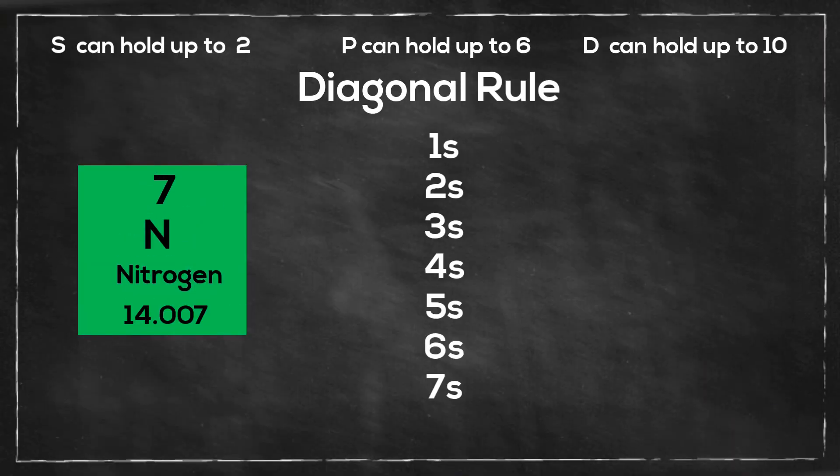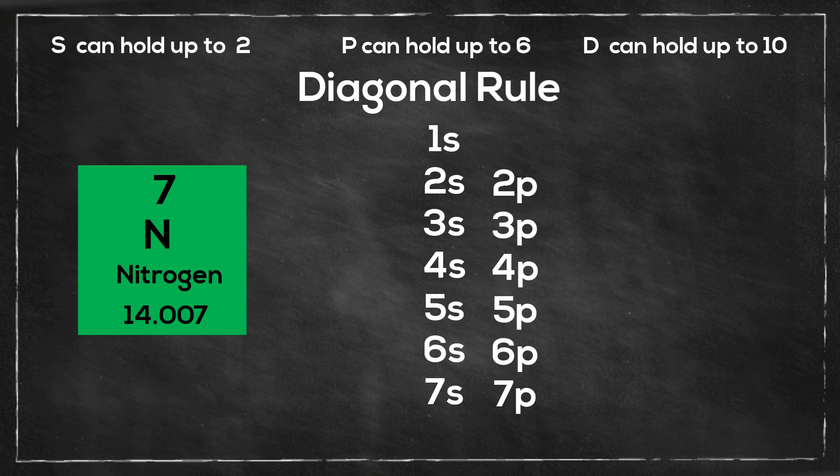First I'll write my 1s orbitals, 1 to 7, then my p orbitals, 2 to 7, then the d orbitals, then the f orbitals.